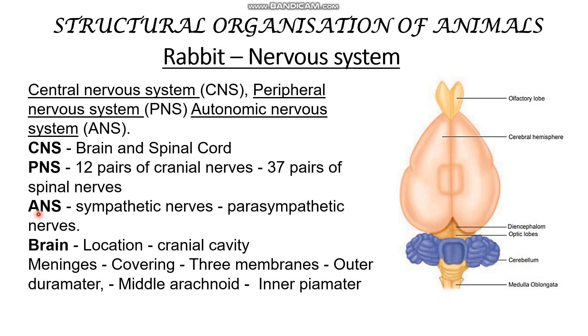The Autonomic Nervous System (ANS) includes sympathetic nerves and parasympathetic nerves.